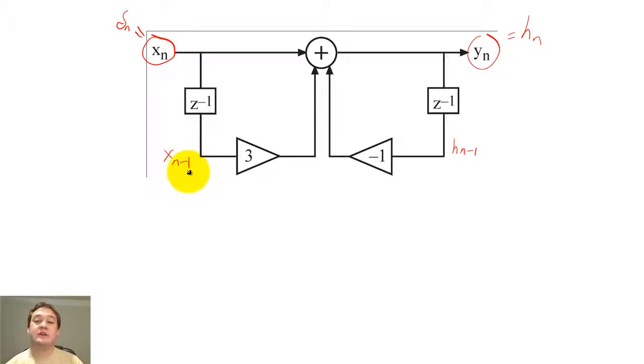We can describe h of n by adding up the different components that create the output. So h sub n would equal h sub n minus 1 times negative 1, plus the input, plus the delayed input scaled by 3.